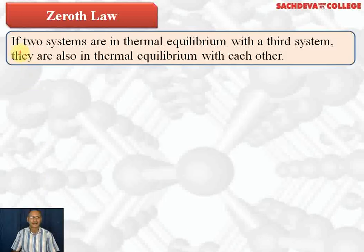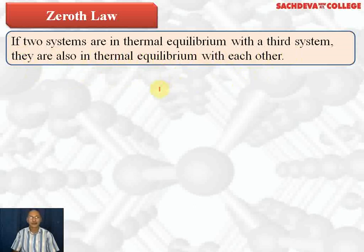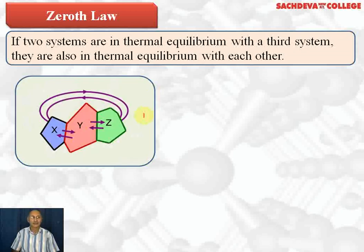Today we are going to start with the Zeroth Law of Thermodynamics. It states: if two systems are in thermal equilibrium with a third system, they are also in thermal equilibrium with each other. In simple terms, if two people are friendly with a third person, they will become friends with each other also.